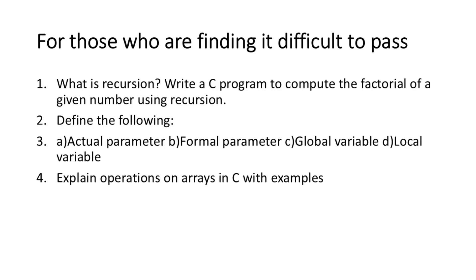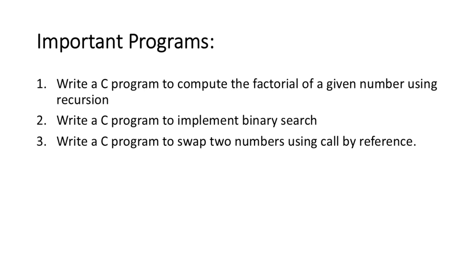For those who are finding it difficult to pass, focus on these key questions from Module 3. These will 100% help you pass: What is recursion? Write a C program to compute the factorial of a given number using recursion. Define Actual Parameter, Formal Parameter, Global Variable, and Local Variable. Explain operations on arrays in C with examples. Important Programs: Write a C program to compute the factorial of a given number using recursion. Write a C program to implement binary search. Write a C program to swap two numbers using call by reference.